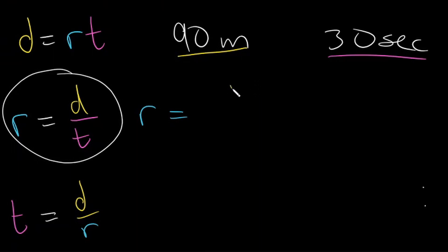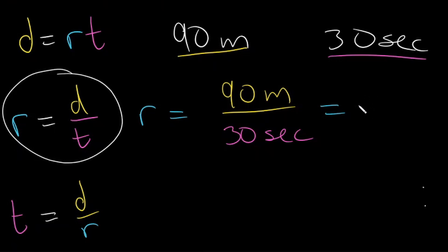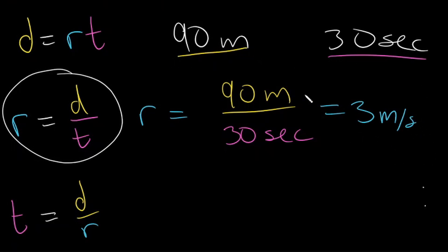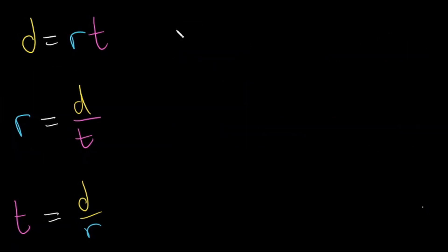Our rate is going to be equal to 90 meters divided by 30 seconds. 90 divided by 30 is equal to 3, and the unit is distance per time — meters divided by seconds, or meters per second. So your average speed during the 90-meter run was 3 meters per second.